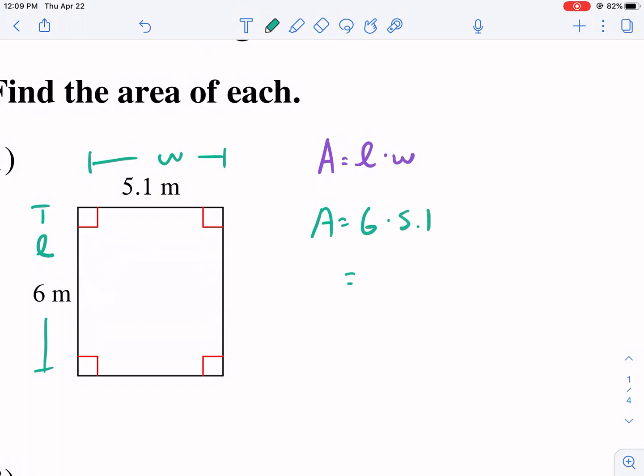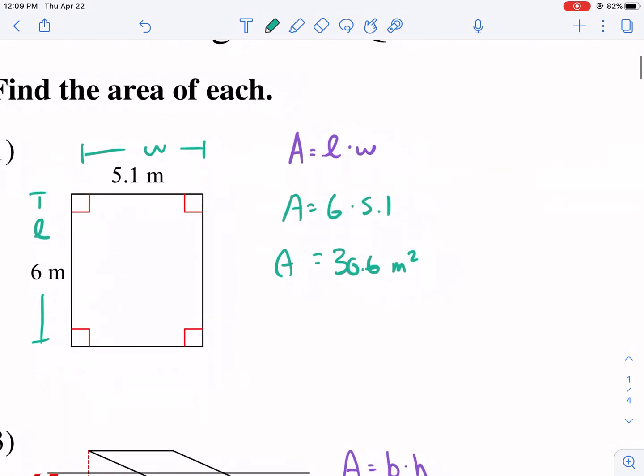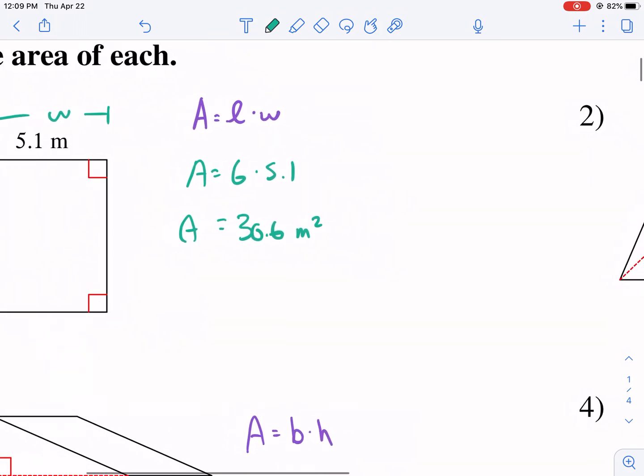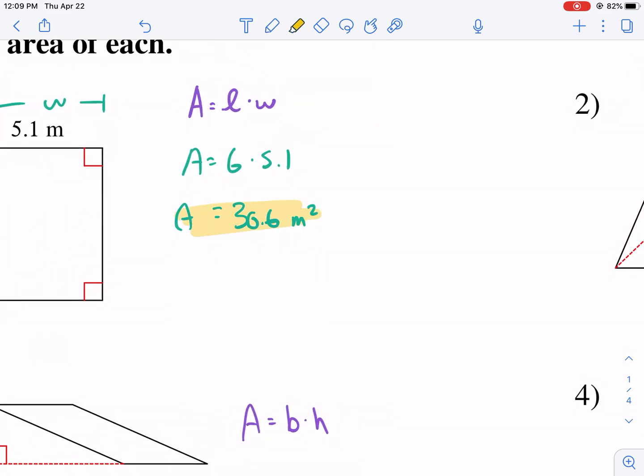And so we're going to go ahead and get our calculator. Multiply these two things together. 5.1 times 6. And that should be 30.6 is our area, but we need the units. Make sure you put the appropriate units. We have meters squared. So we have 30.6 meters squared and that is going to be our answer for number one.